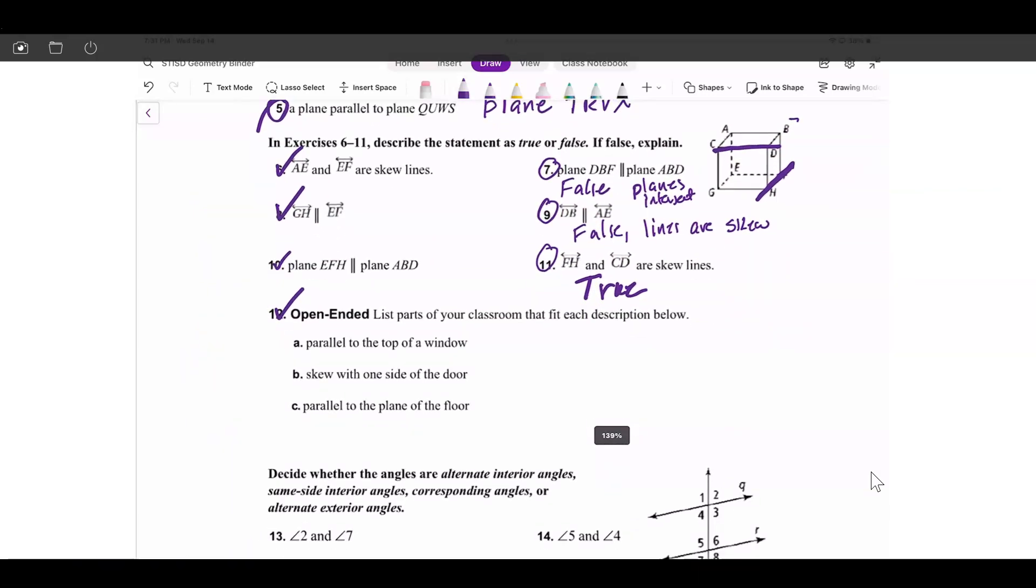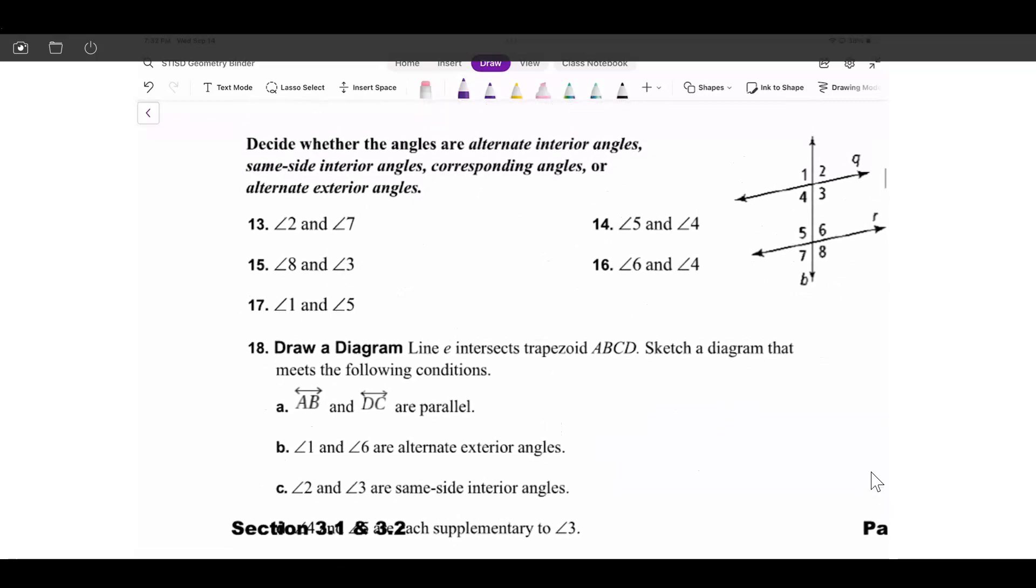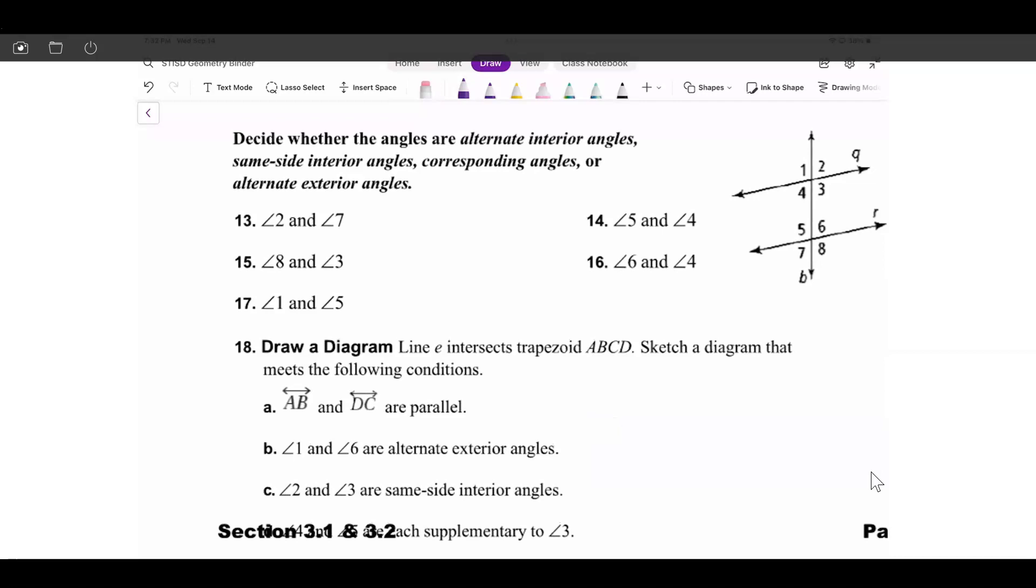I'm going to go to number 12. That's the one you're going to have to do. Number 13. We did have a foldable, and in that foldable, we talked about different types of angles. For example, angle 2 and angle 7, the ones that I put a dot, those are alternate exterior. Now, we have the next pair of angles, which is 8 and 3. Those are corresponding angles. Angle 1 and angle 5 are also corresponding angles.